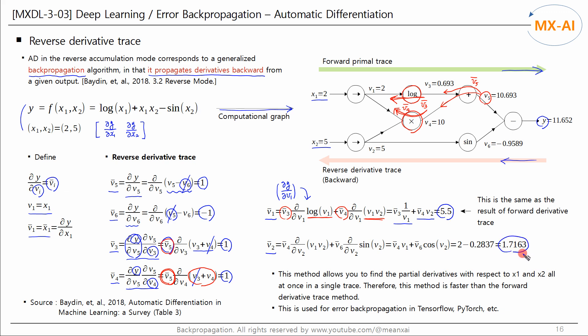Now all partial derivatives of y with respect to x1 and x2 have been computed. This method allows finding all partial derivatives at once in a single trace, making it faster than the forward derivative trace method.